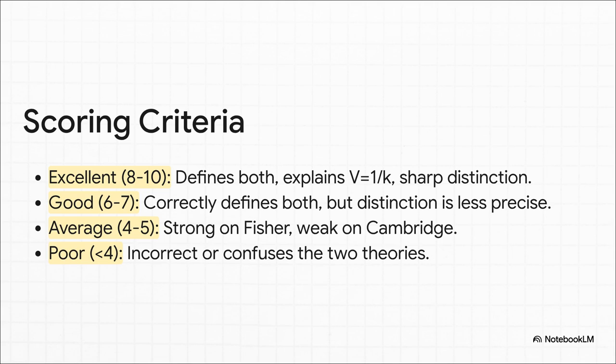So, here's what your grader is thinking. An average answer? You probably explained Fisher's side pretty well. A good answer? You explained both, but the connection between them was maybe a little fuzzy. But the excellent answer? That's the one that absolutely nails the distinction. It clearly explains what K is. And, this is the key. It explicitly states that V equals 1 over K. That little formula is the secret signal to the grader that you don't just know the facts. You truly understand the relationship.